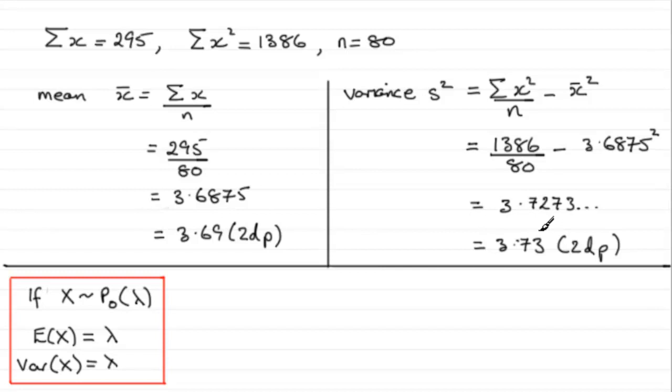So it's because of this, because we've got the mean and the variance as being roughly the same, then that supports the use of the Poisson distribution.